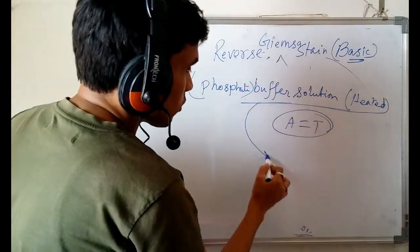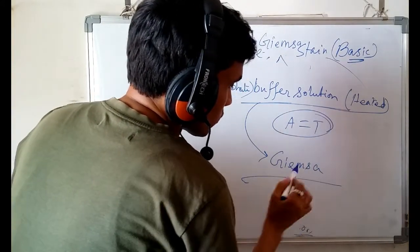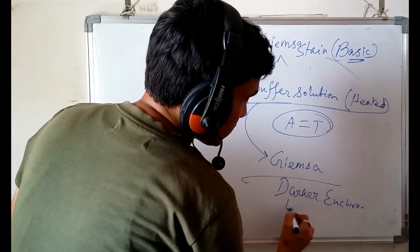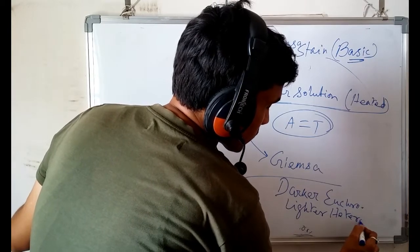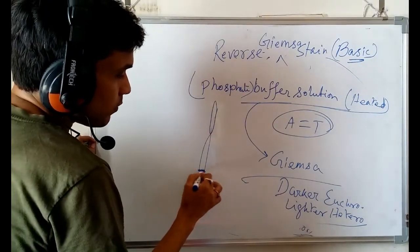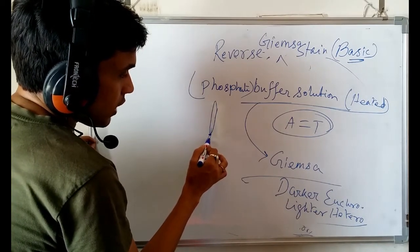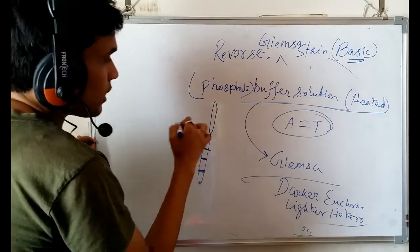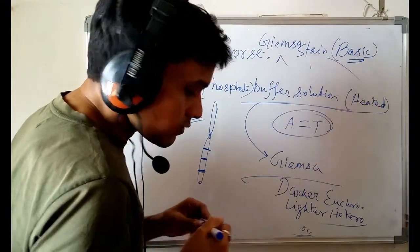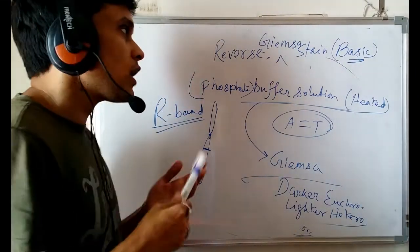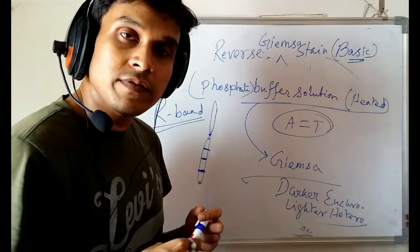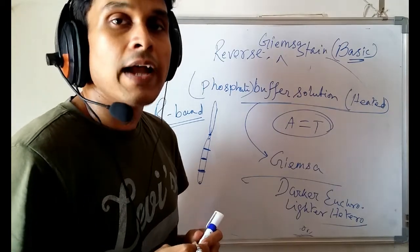After the phosphate buffer treatment, you apply the stain. It will produce a darker euchromatic region and a lighter heterochromatic region. After reverse G-staining, you also get a banding pattern where the genic part becomes darker and the non-genic part is lighter. I think it is now clear how chromosomal staining can be done and what the utility of the karyotype image is. If you like this video, click the like button, don't forget to subscribe to my channel, and do share with your friends. Thank you.